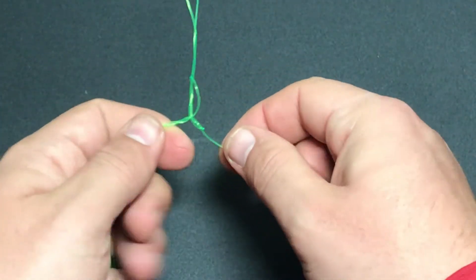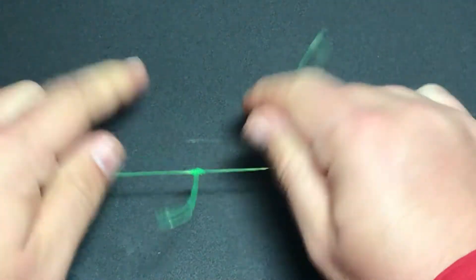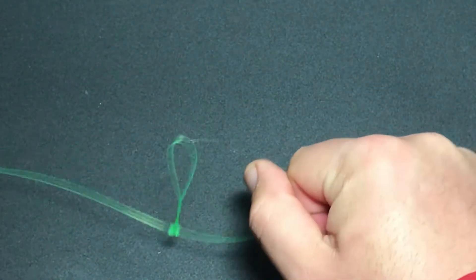That's going to start this loop and then after that's done, I'm going to pull against the tag ends in opposite directions and that's going to pull everything tight and create our dropper loop.